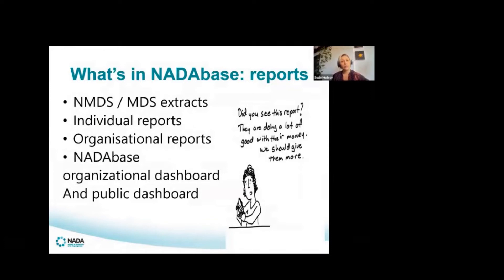You can also pull out individual reports that are very specific to the person you're working alongside. You can share with them their progress as they move through a program or months of counselling. There are also organisational level reports that can tell us everything from who's coming through the door to how we're going in terms of data quality, and also follow-up rates for outcomes data collection.